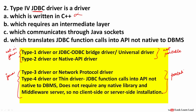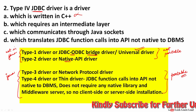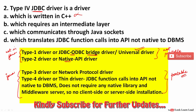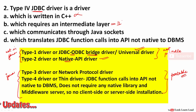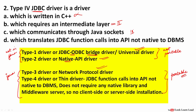Type 1 driver is the JDBC-ODBC connectivity driver — a bridge driver between JDBC and ODBC, sometimes called the universal driver because it can connect to any type of database. Type 2 is the native API driver; it requires a native library or middleware server — an intermediate layer. Type 3 is the network protocol driver, which communicates through sockets. Type 4 is the thin driver — it converts JDBC function calls into an API not native to the DBMS.